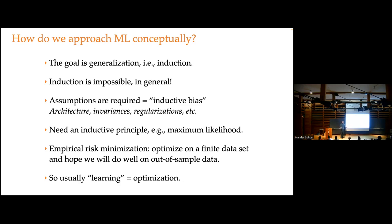The way we approach these problems, we're after generalization. This is fundamentally solving the problem of induction — looking at the past and trying to guess what's going to happen in the future. In general, that's impossible in the absence of making assumptions about the way the world works. In machine learning, we refer to this as the inductive bias: what kinds of structure I expect to be able to learn from the world. We encode this in deep learning through architectures, regularization, and so on.